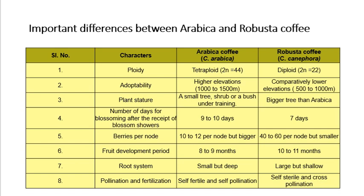The important differences between Coffee arabica and Coffee robusta: First, ploidy level — Coffee arabica is a tetraploid species with chromosome number 2n equal to 44, while robusta is a diploid species with 2n equal to 22. Second, adaptability — arabica requires higher elevation, while robusta requires comparatively lower elevation. Regarding plant form, the arabica is a small tree, shrub or bush under training, while robusta is a bigger tree than arabica.